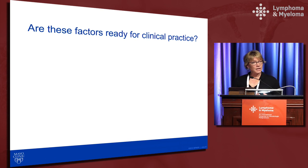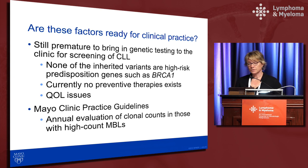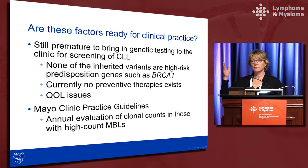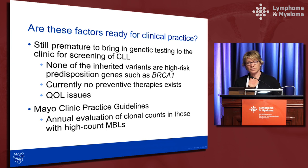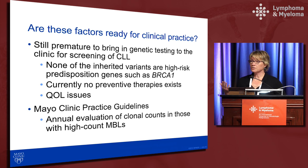Are these factors — age, sex, genetic factors, environmental factors — ready for clinical practice? In my opinion, it is still premature to do genetic testing or screening for CLL. None of the inherited variants identified to date are high-risk predisposition genes like BRCA1 for breast cancer; the CLL variants are very low risk, and even combined the increased risk is modest. There are no preventive therapies — if someone is found to have MBL with many inherited variants, there is currently nothing actionable. There are also quality-of-life issues, as genetic knowledge can cause anxiety and stress.